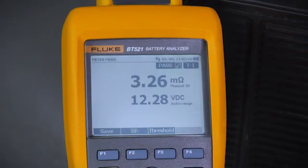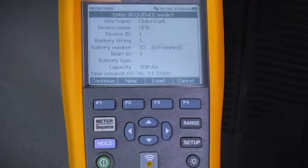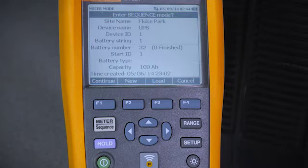Right now the instrument is in meter mode. Let's go to sequence mode by pressing the meter sequence button. Sequence mode allows you to take and store multiple measurements simultaneously.